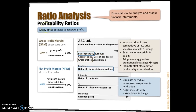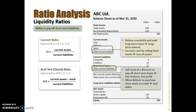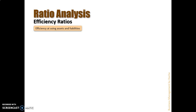In the previous video, we explained profitability ratios — the calculations to get the gross profit margin and net profit margin out of the profit and loss account. We also explained how to get the liquidity ratios, the current ratio and acid test ratio, out of the balance sheet figures. Now we're going to the last one, which is efficiency ratios.